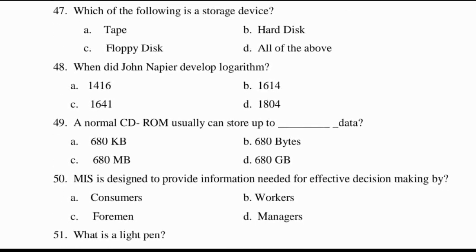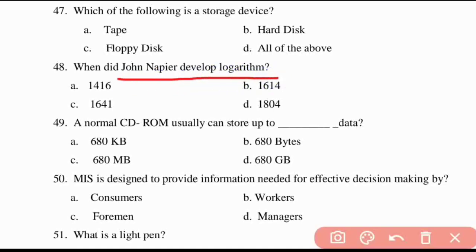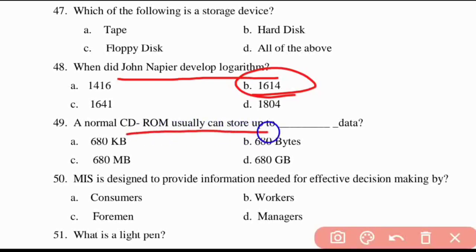Forty-eighth question: when did John Napier develop logarithm? It was in the year 1614. John Napier developed logarithm in 1614.